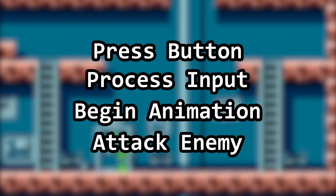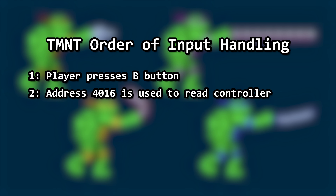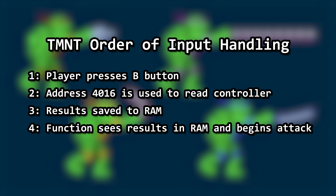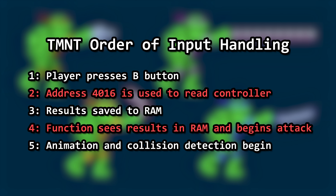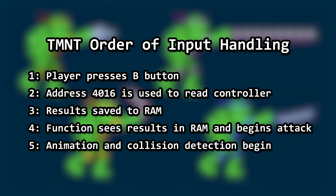Let's be more specific. Player presses B button for attack. Address 4016 is pulled to get first controller input on the NES and provides data for that button press. The results are saved into RAM for processing. Sometime later, a function call sees that input value in RAM that indicates an attack and therefore starts that attack. Animation and collision detection begin. TMNT has some amount of lag for the time period between reading the controller and the attack function call picking up the input. One reason is the game runs at 30 frames per second. A second reason is because it uses the delta modulation channel for drum playback. The game also has some lag — either by design or not — for the animation of the turtle's attack. Let's tackle animation frames first since they are something we can see. I'm going to pick up at this moment in time when the attack function first sees that the player pressed the B button.